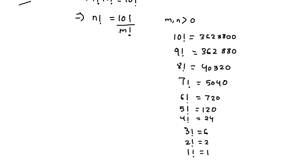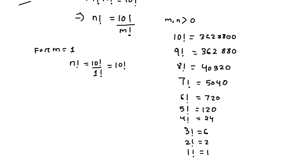Now we'll put the value of m from 1 to 10 and check for which value of m we are getting a perfect factorial value for n. For m equals to 1, n factorial will be 10 factorial divided by 1 factorial, so we are getting 10 factorial. So m equals to 1 is a valid value, giving us m comma n equals to 1 comma 10.